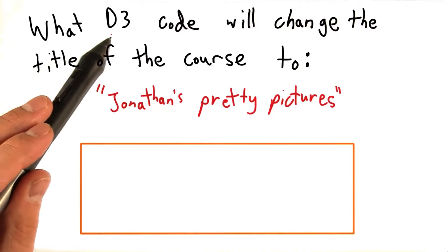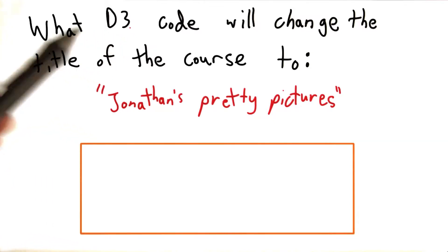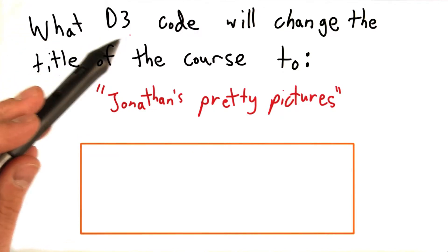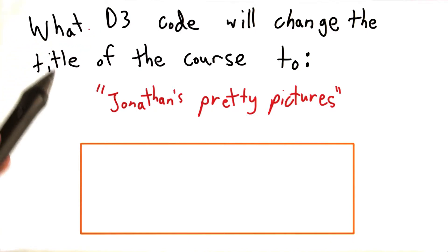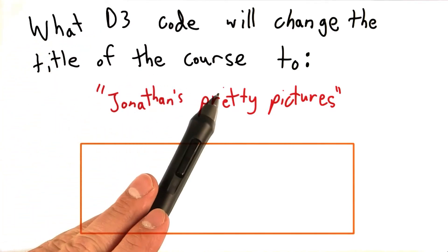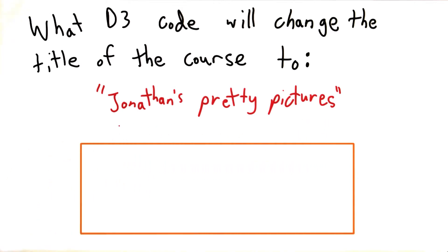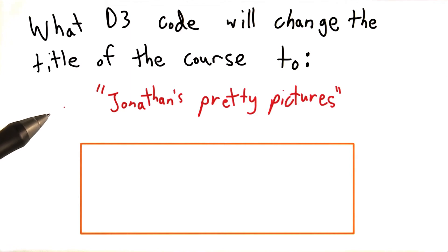Now that we've seen how we can use D3 to manipulate HTML elements, I want you to take a moment to explore some of the functions defined on a D3 selection in order to change the title of the course on the web page to Jonathan's Pretty Pictures. The title I'm referring to is the data visualization element right above the video player.